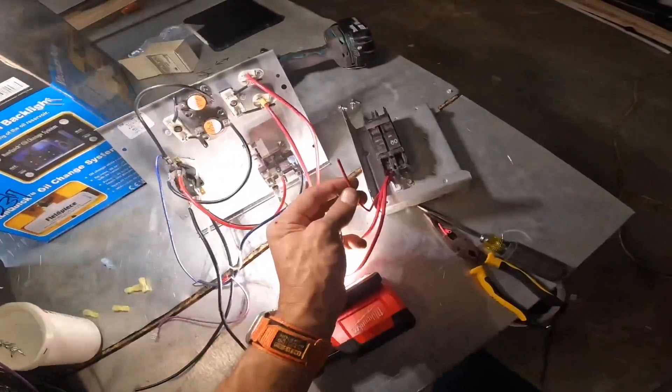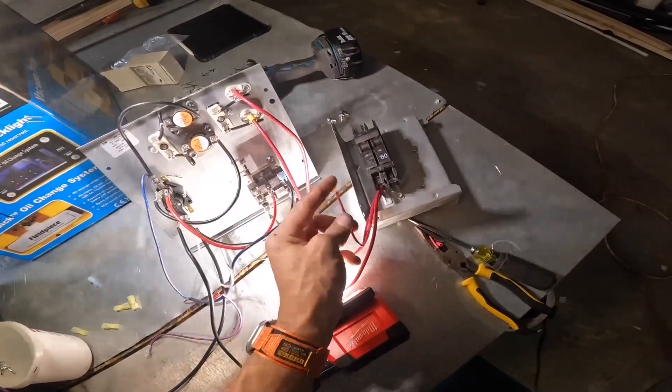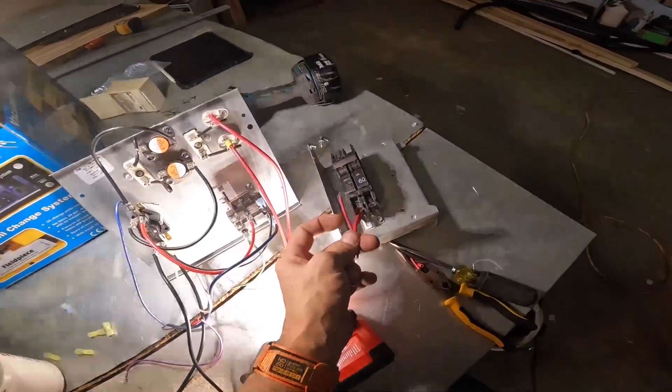Alright, this is going to go to my run winding on my blower motor and that's likely going to be a white wire. Sometimes they are yellow.